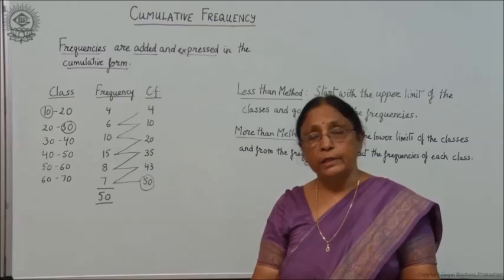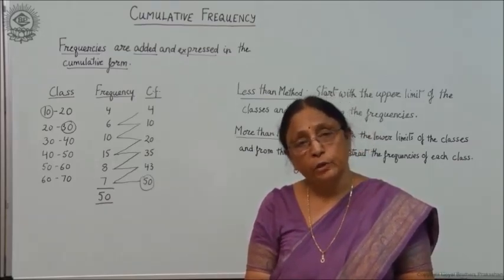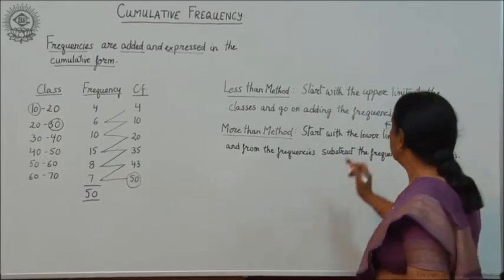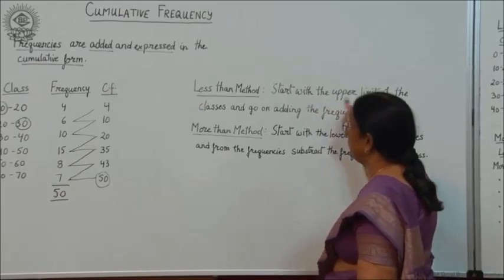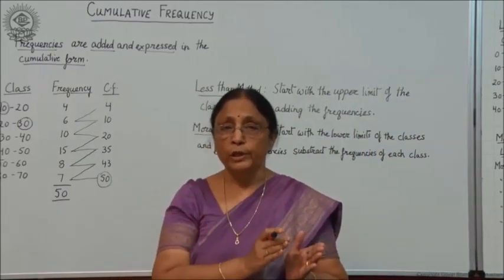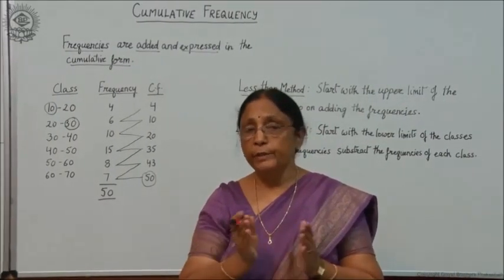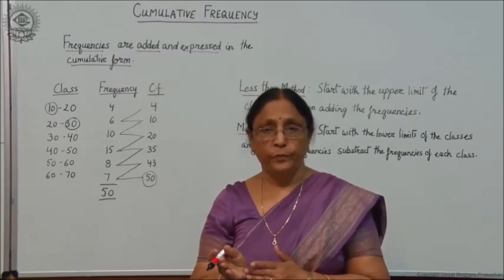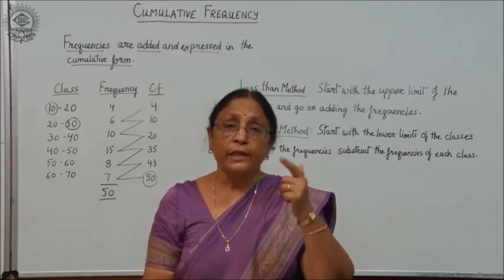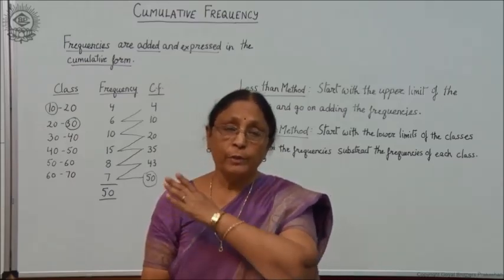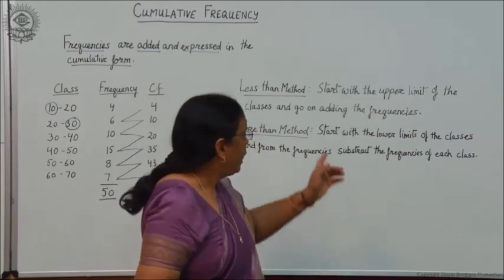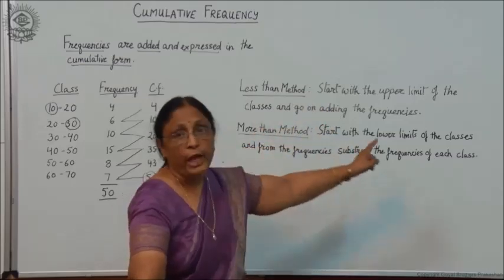We will see what we mean by less than method and more than method, and how we apply these two methods. In the less than method, we start with the upper limit of the classes and go on adding the frequencies. As I told you, a class interval has two limits: one is called the lower limit and the second is the upper limit — lower limit is L1 and upper limit is L2. In the less than method, we start with the upper limit because we are saying less than a particular limit. We are taking less than a particular upper limit, and then we go on adding the frequencies.